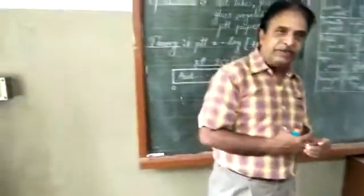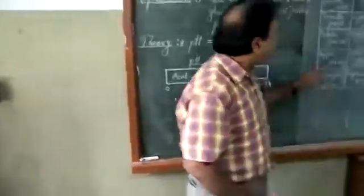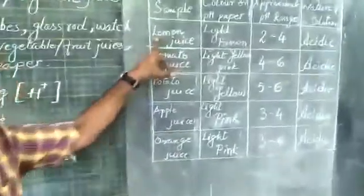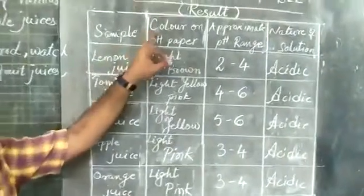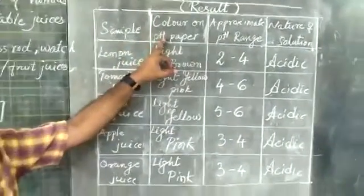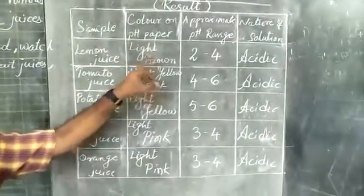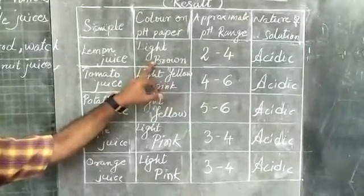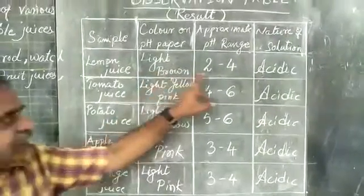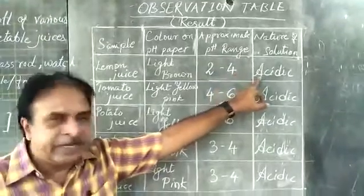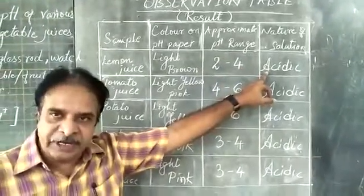Now observe the change in the color of the pH paper. For lemon juice, the pH paper will turn light brown; comparing with the reference value, the pH will be between 2 to 4, so it is acidic in nature.